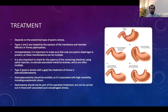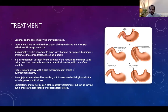Treatment depends on the anatomical type. Types 1 and 2 can be managed with Heineke-Mikulicz or Finney pyloroplasty. Intraoperatively, it is important to ensure no additional pyloric diaphragms are present, as they can be multiple. The patency of the remaining intestine must be checked, as multiple atresias can coexist throughout the GI tract. Some advocate a lower GI enema to rule out colonic atresia. A saline test to check GI potency is mandatory. Type 3, with a gap, requires pyloro-duodenostomy. Gastrojejunostomy should be avoided due to high morbidity and risk of anastomotic ulcer. Gastrostomy is not routine unless there is an indication such as esophageal atresia.